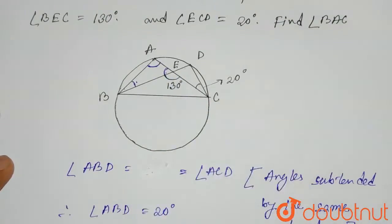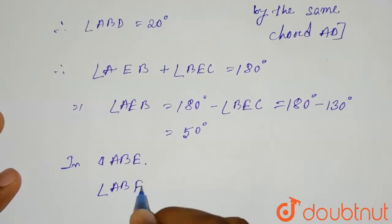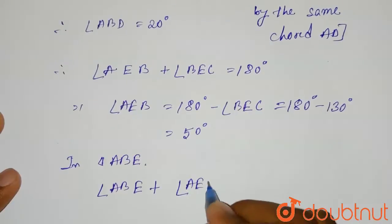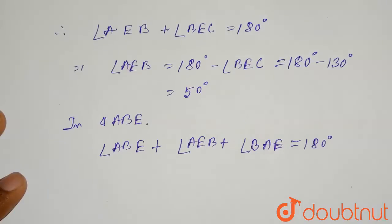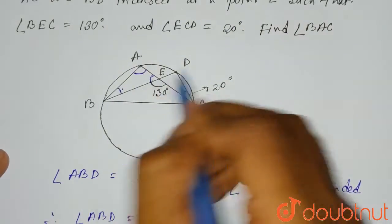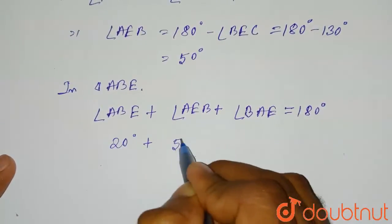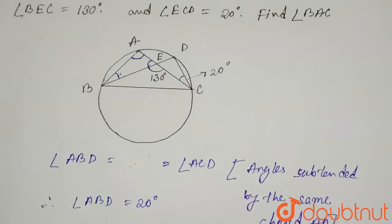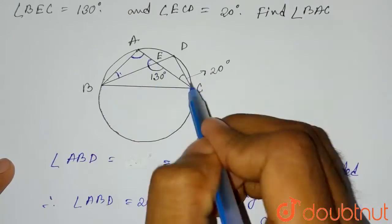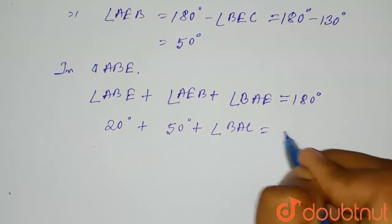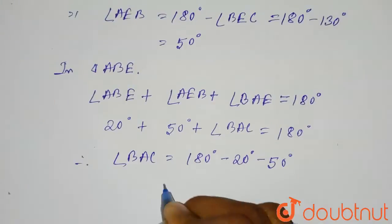So in triangle ABE, we can write that angle ABE plus angle AEB plus angle BAE equals 180 degrees. Now angle ABE equals angle ABD, which is 20 degrees, since E is just an extension up to D. And angle AEB is 50 degrees. Here angle BAE can be written as angle BAC. So: 20 degrees plus 50 degrees plus angle BAC equals 180 degrees. Therefore, angle BAC equals 180 degrees minus 20 degrees minus 50 degrees, which equals 110 degrees.